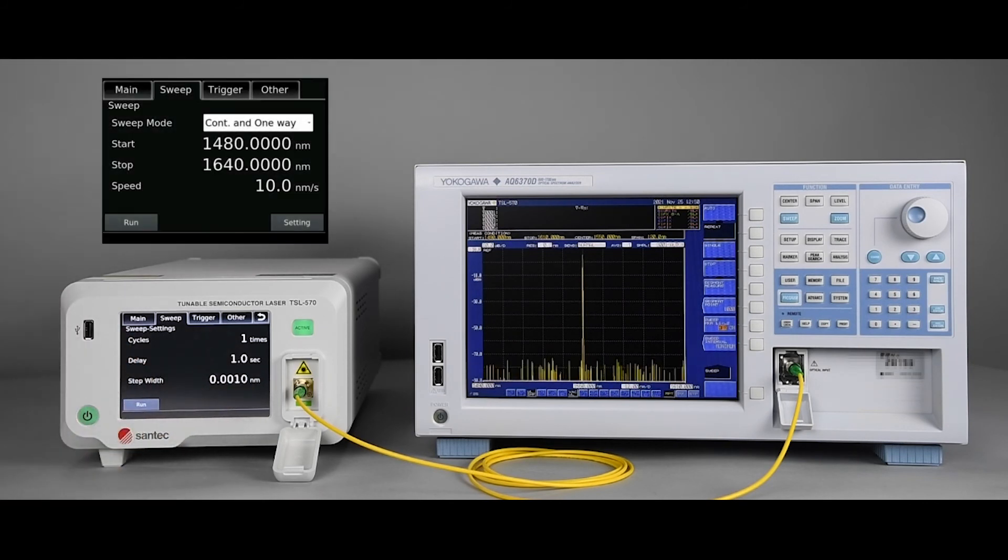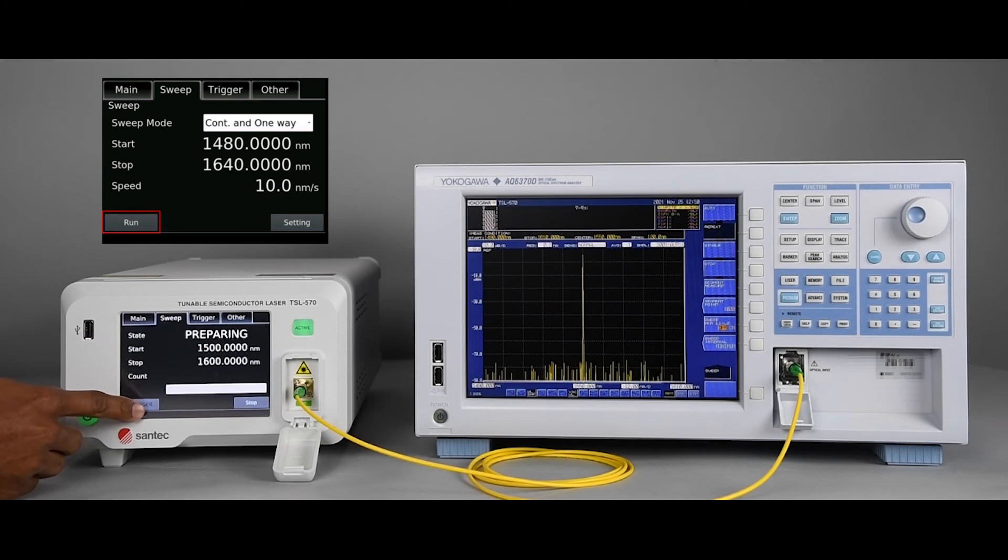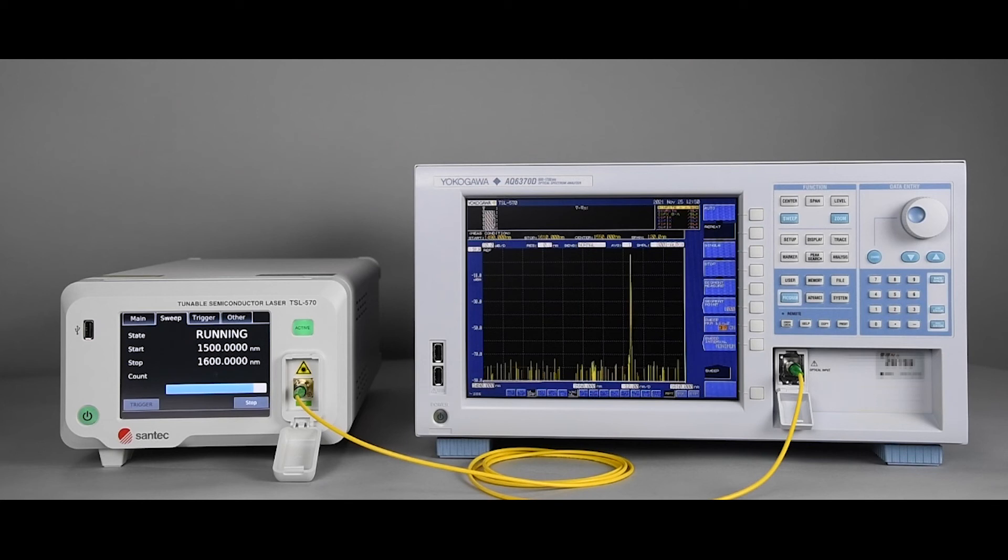Now, by pressing run, the TSL sweeps across the configured wavelength range. Here on the OSA, we can see the thin line width sweeping across the selected sweeping range.